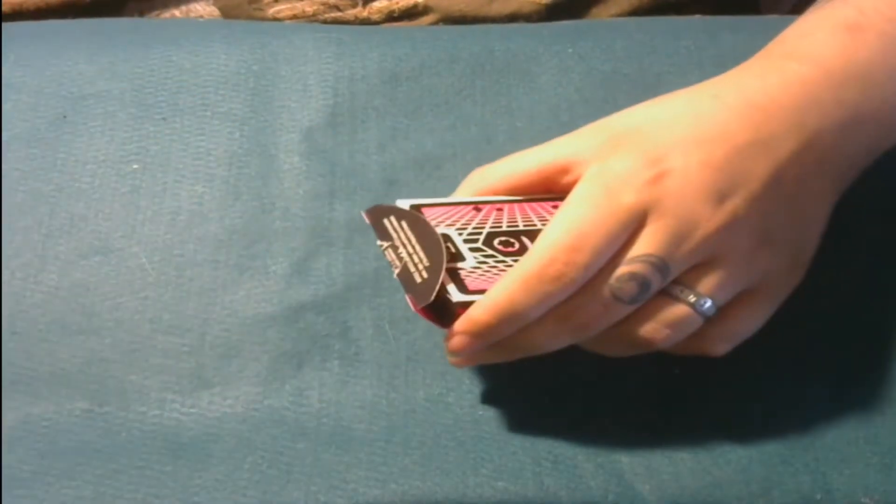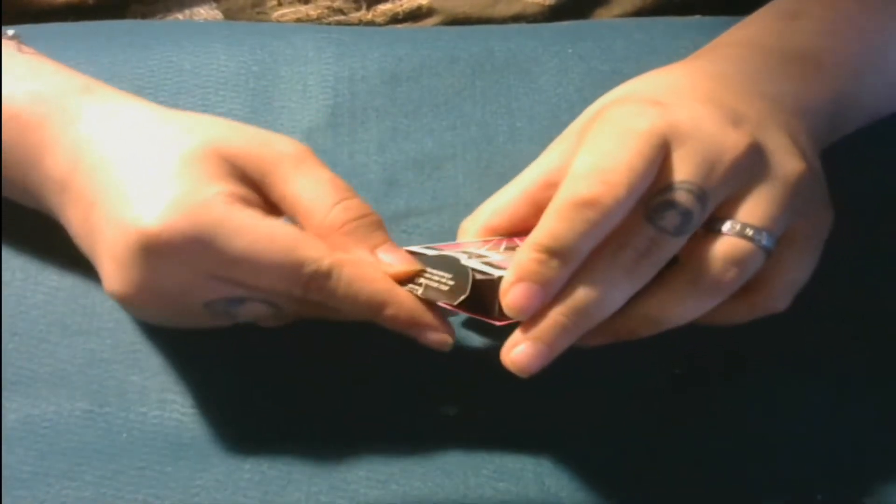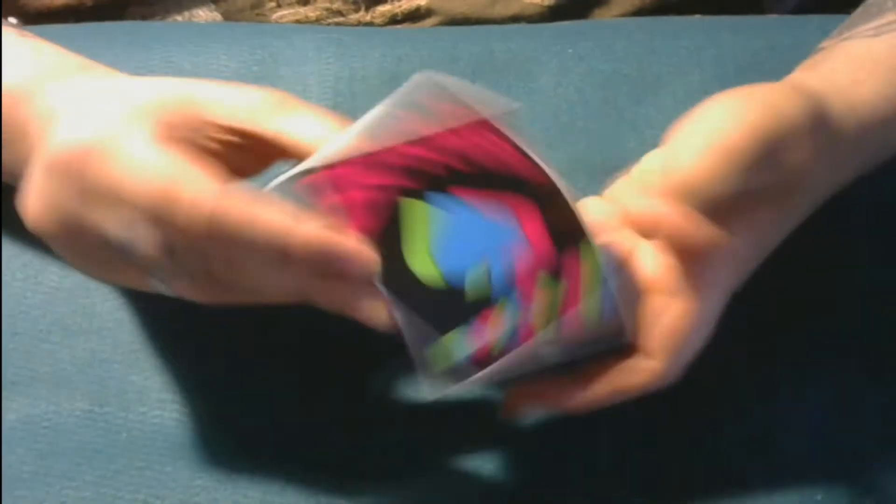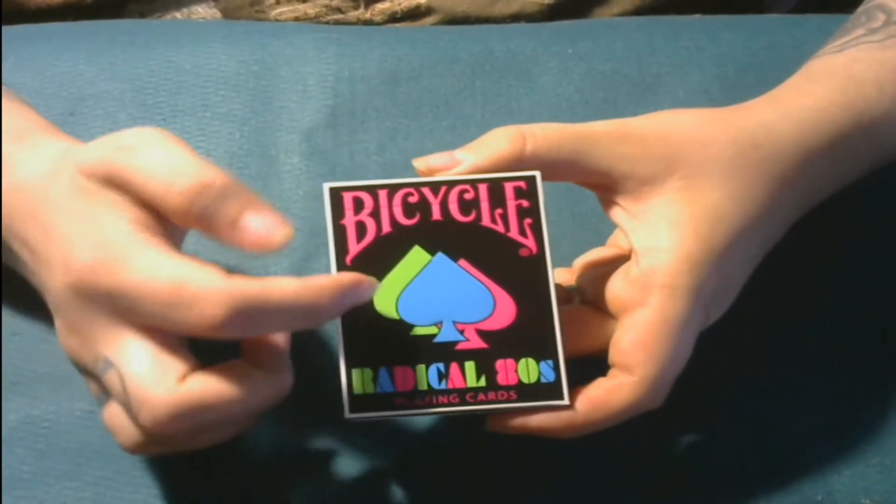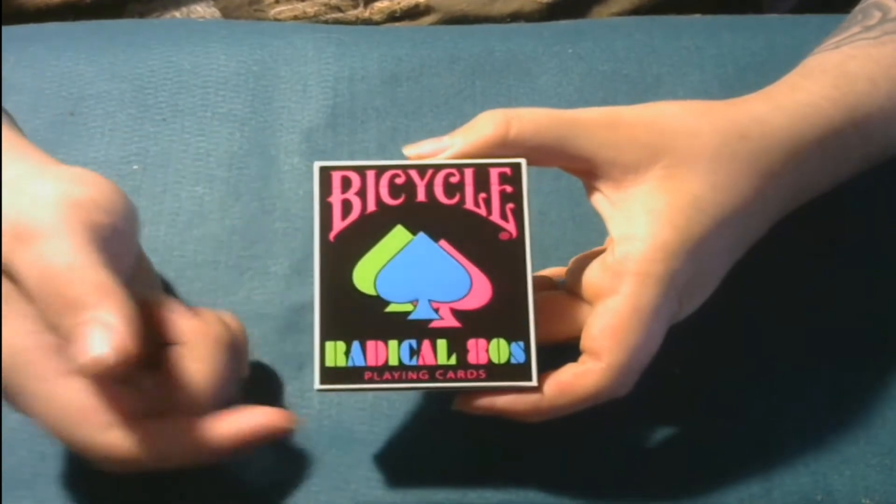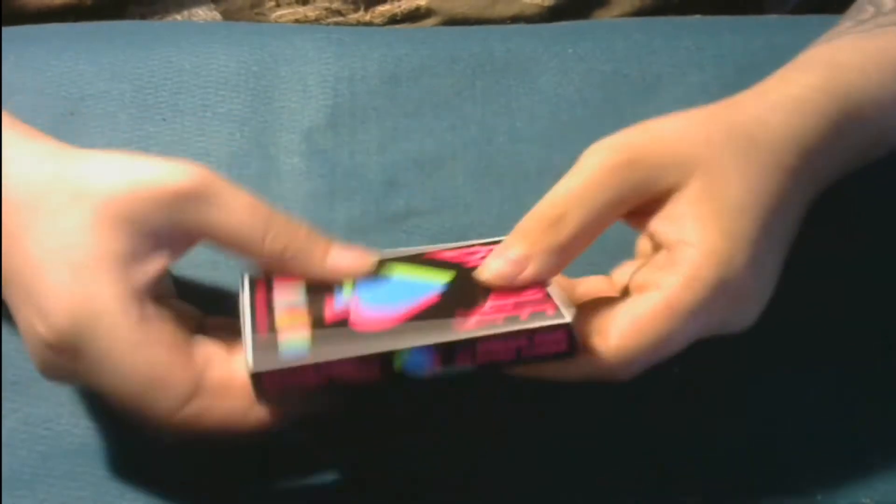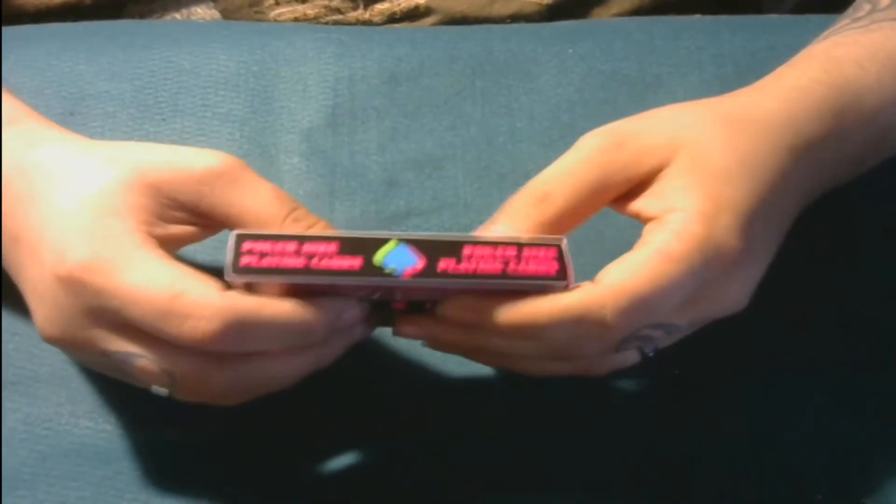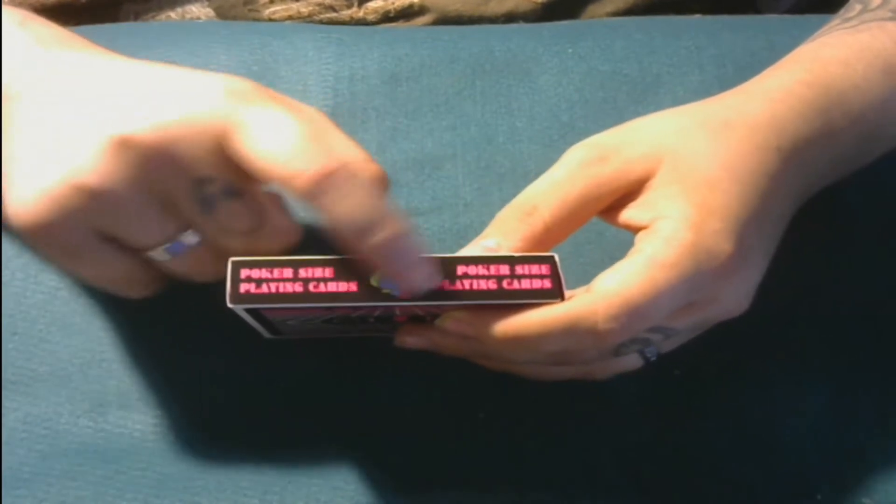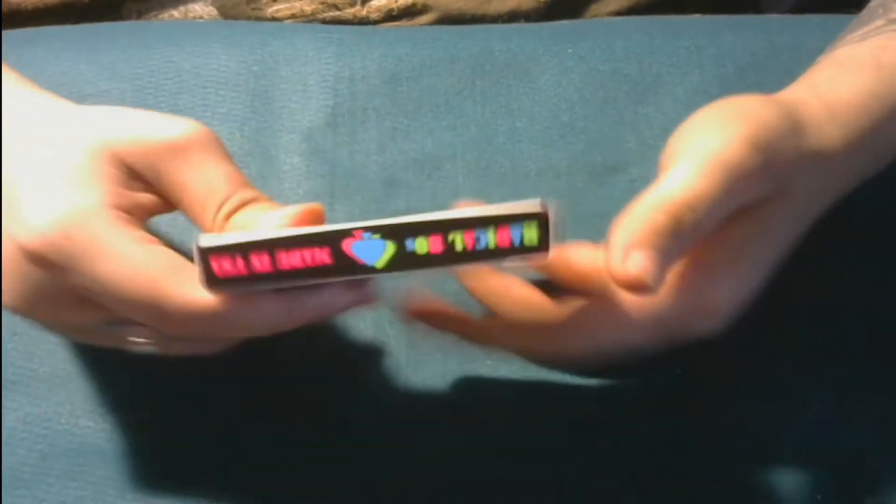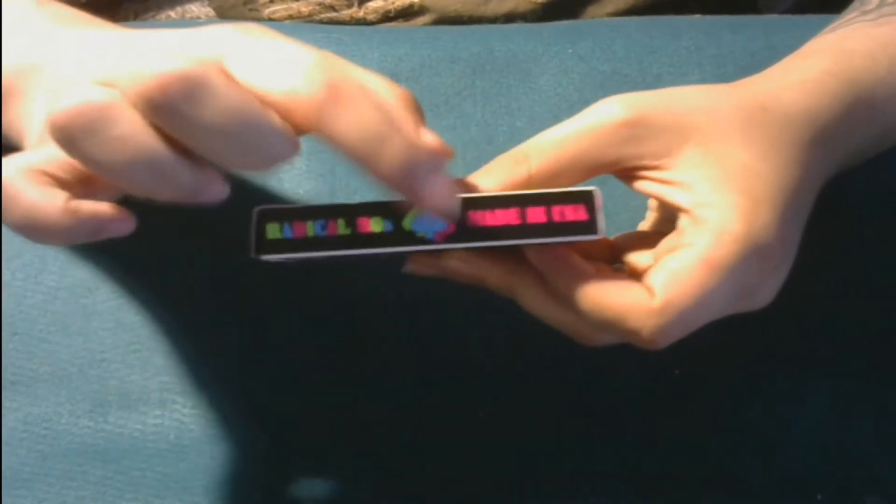Before we actually get into the product itself, let's see what the box has on it. So as you can see, we got Bicycle up here with a green, a blue, and a pink spade pip. And we got Radical 80s playing cards. On the side, we see it says poker-sized playing cards, with the same pips that you see on the front. On the other side, it says Radical 80s, made in China, with the same three pips.